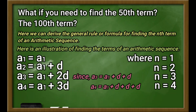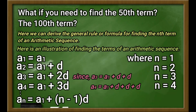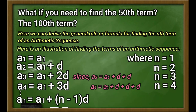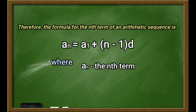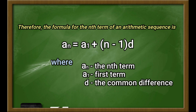What did you notice about the numerical coefficient of d and the value of n? We are subtracting 1 from n to get the numerical coefficient of d. In other words, in the formula, you are to multiply n minus 1 to d. Again, d is the common difference of the arithmetic sequence. Therefore, we get the formula: A sub n is equal to A sub 1 plus the quantity n minus 1 times d. Where A sub n is equal to the nth term, A sub 1 is equal to the 1st term, d is the common difference, and n is the set of natural or counting numbers.